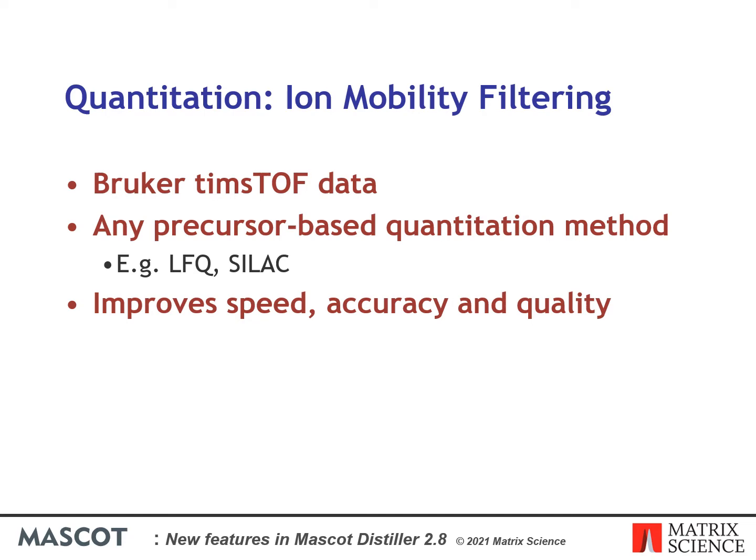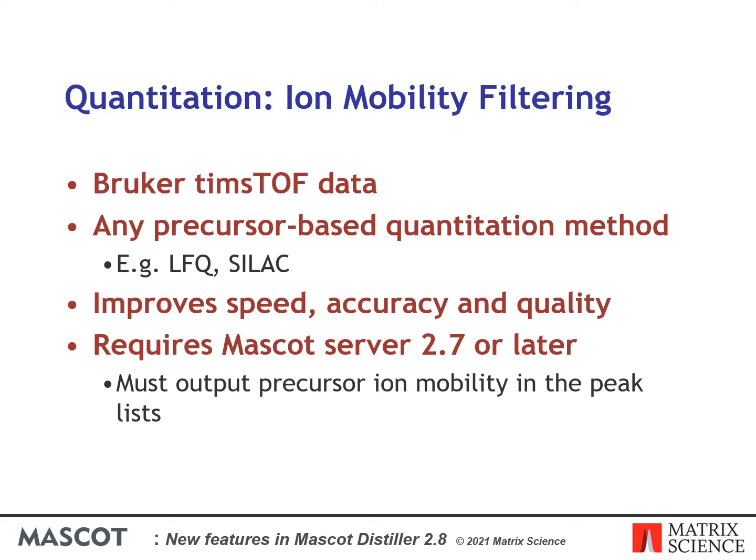For a given peptide match, an ion mobility range is calculated from the identified matches and the precursor ion mobility grouping tolerance defined in the processing options. Only MS1 signals from within the calculated ion mobility range are then used during XIC peak detection. This requires that the data are searched using Mascot Server 2.7 or later and that the precursor ion mobility values are included in the peak lists.